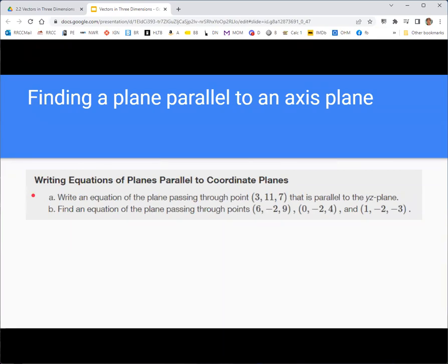So try to find the equation of a plane that passes through this point, 3, 11, 7, and is parallel to the yz plane.